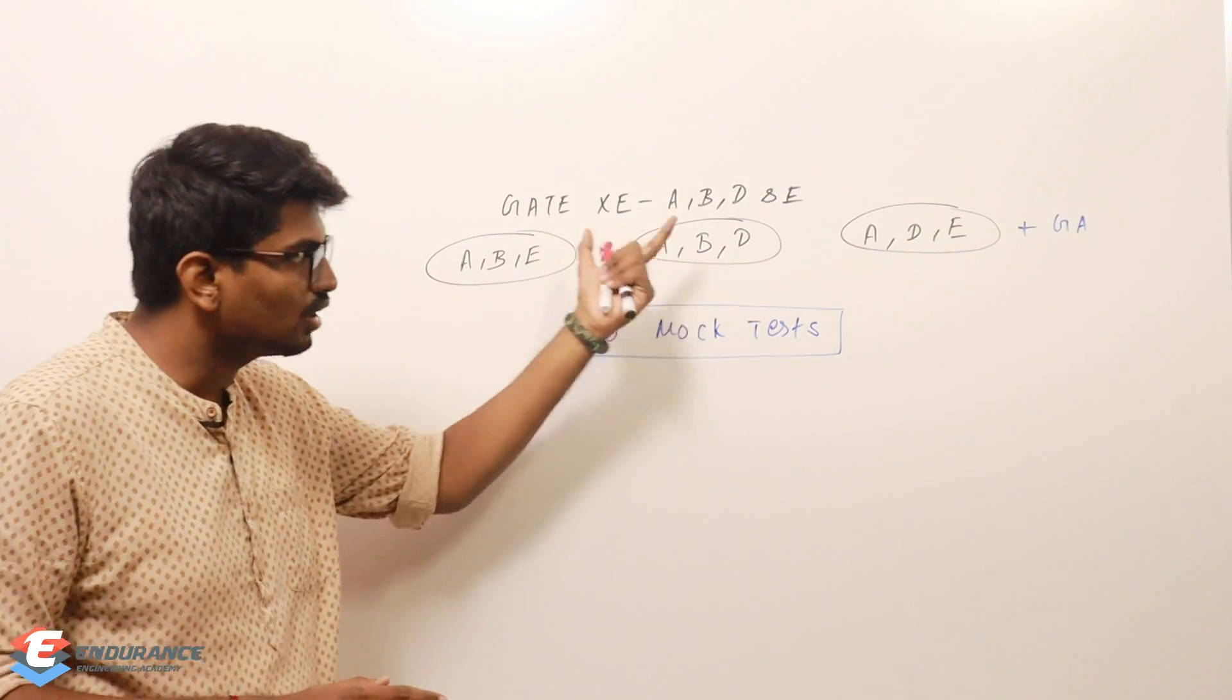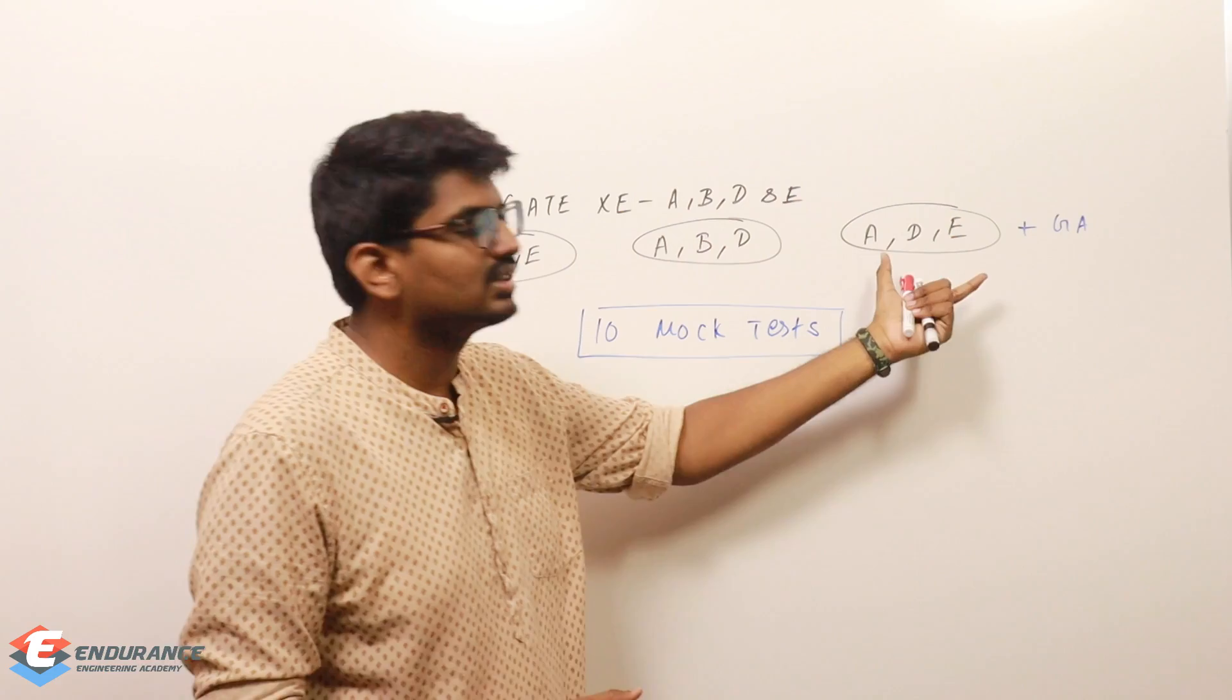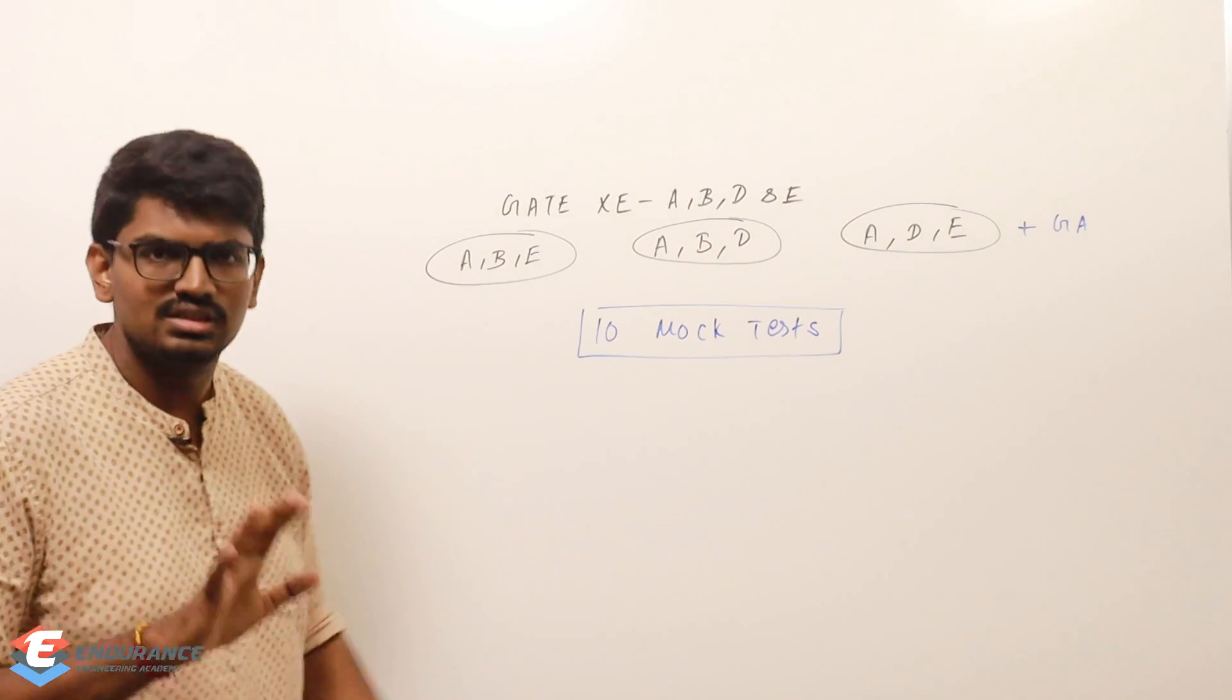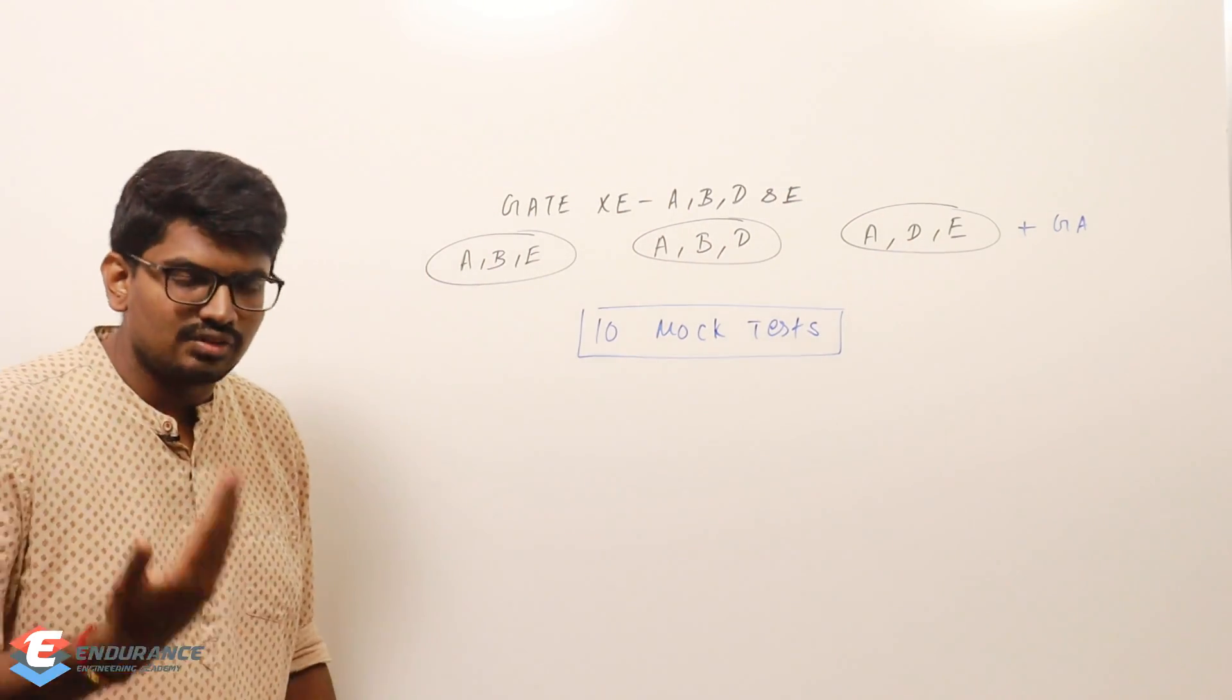For this combination you will have 10 tests, for this combination 10 mock tests, for this combination 10 mock tests. In all of these, GA will be there - 5 one-mark and 5 two-mark questions of general aptitude will be compulsory.